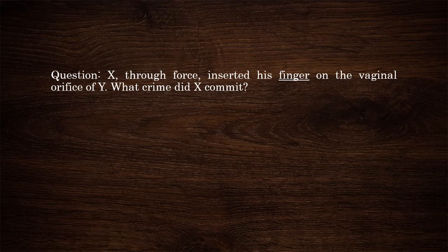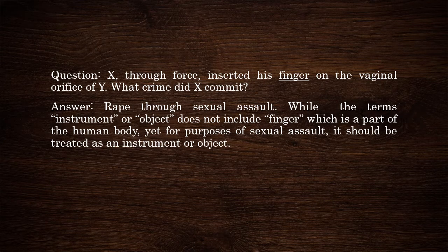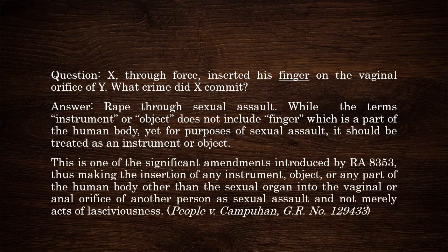Question: X, through force, inserted his finger into the vaginal orifice of Y. What crime did X commit? Answer: Rape through sexual assault. While the terms 'instrument' or 'object' do not literally include a finger — which is part of the human body — for purposes of sexual assault, it should be treated as an instrument or object. This is one of the significant amendments introduced by RA 8353, making the insertion of any instrument, object, or any part of the human body other than the sexual organ into the vaginal or anal orifice as sexual assault and not merely acts of lasciviousness, as ruled in People v. Kampuhan.